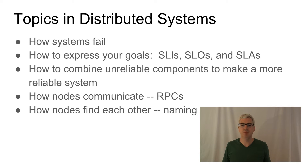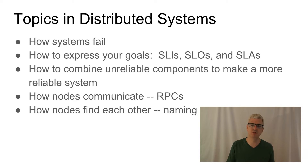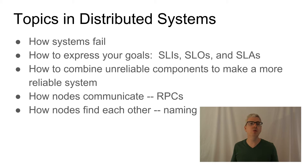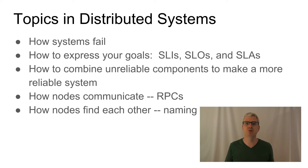The first topic I'm going to talk about is how distributed systems fail — not just how distributed systems fail, but how individual systems fail. If you're going to build a system out of multiple computers and you want that system to be more reliable than the individual computers, you have to really understand how those computers break. If you don't know how computers break, it's hard to build a system that tolerates those failures and keeps on working in spite of them.